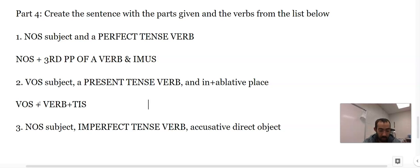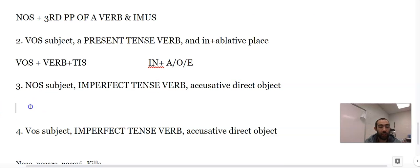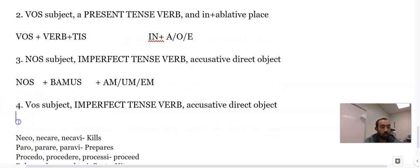Vos, y'all, is a present tense verb, so y'all, vos, plus a verb with -tis. And in plus the ablative is in plus a noun, a place, with an o or e depending on its declension. Nos is a we, so nos plus -bamus plus whatever your direct object that needs an -am, -um, or -em. And it's the same thing for vos, so it would be vos is y'all and that's going to be vos plus -batis plus -am, -um, or -em.